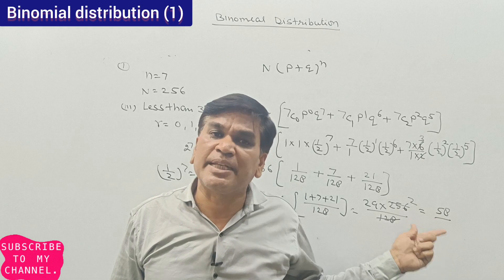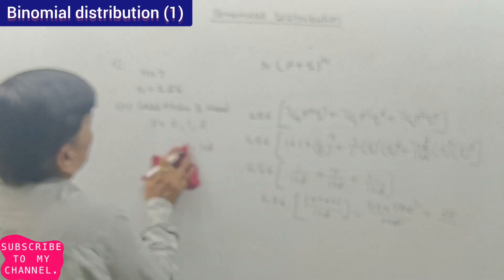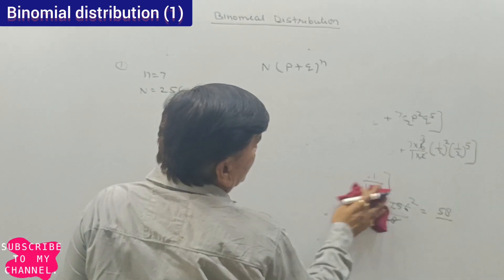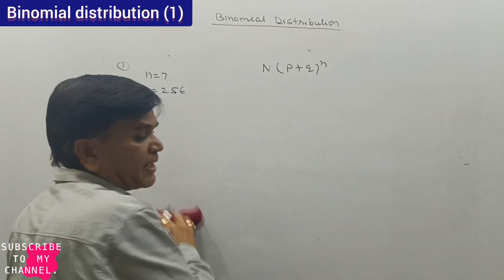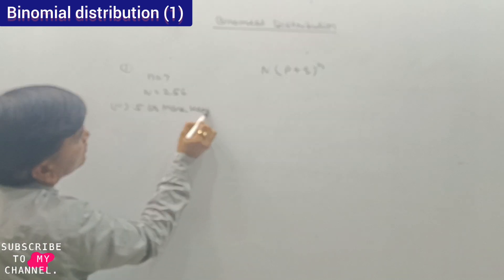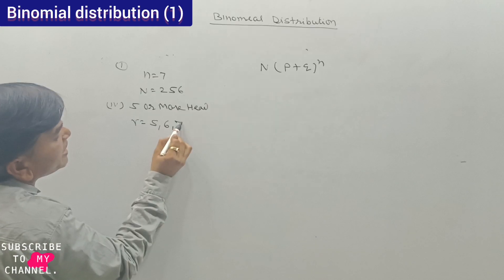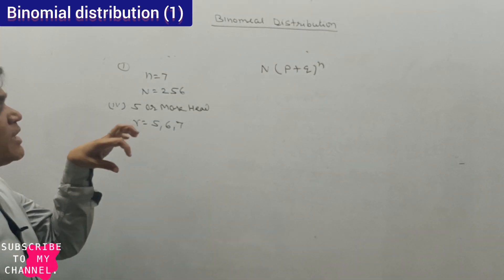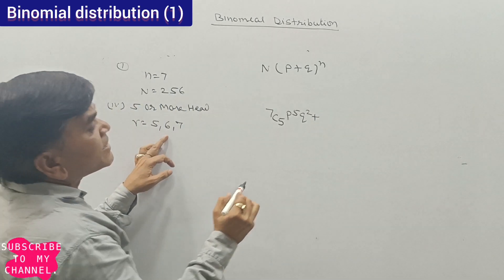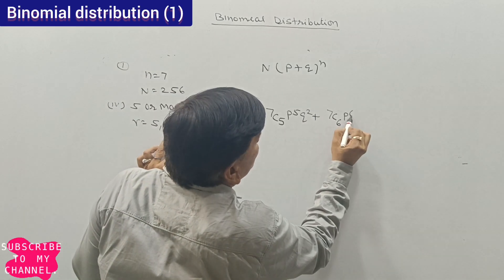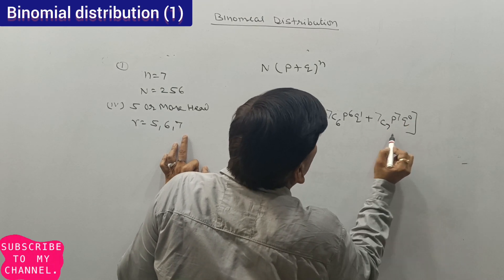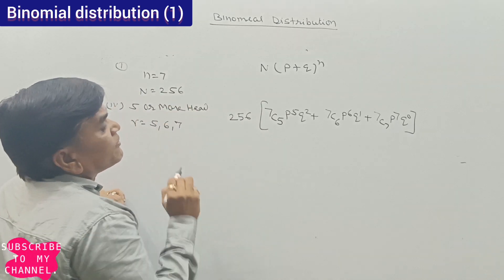The fourth question: 5 or more heads, meaning head may be 5, 6, or 7. So we compute 7C5 × p^5 × q^2 + 7C6 × p^6 × q^1 + 7C7 × p^7 × q^0, all repeated 256 times. We have 256 × [21×(1/2)^7 + 7×(1/2)^7 + 1×(1/2)^7].